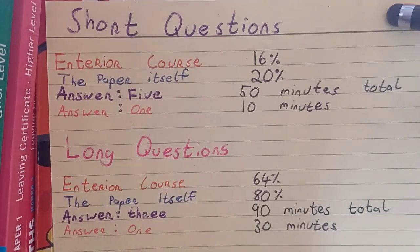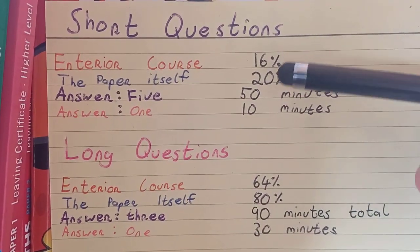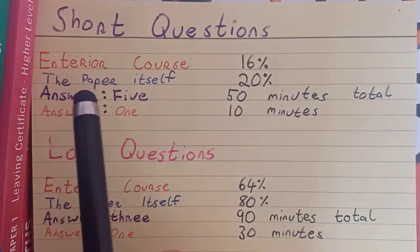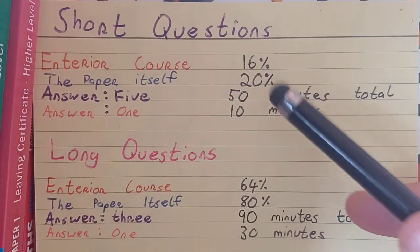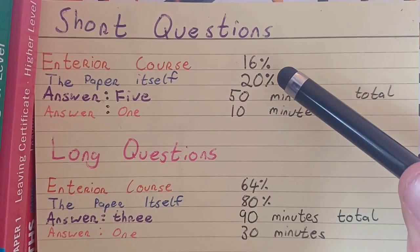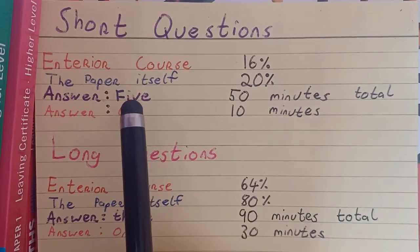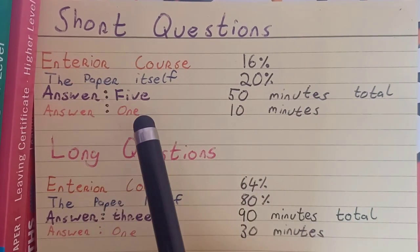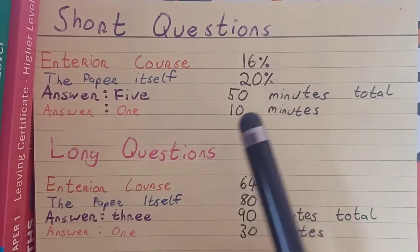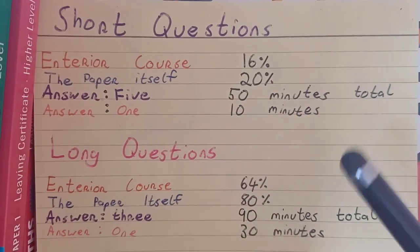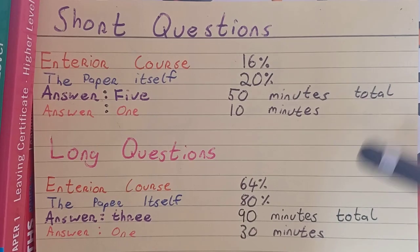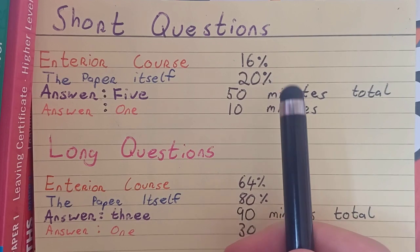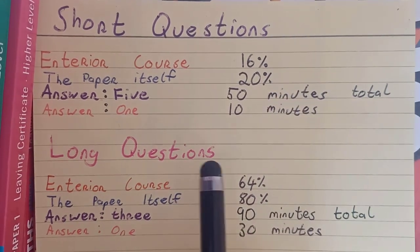Then after that, the short questions, the section one of the course is worth 16% of the entire course. That's including your project. The paper itself, it's worth only 20% of that. You're being marked out of your best five. So in theory, if you spend 50 minutes total doing it, and you answer one question for every 10 minutes, you should be grand. Although in that 50 minutes, I think you should be able to answer way more than five. But after that 50 minutes is up, you should definitely move on to the long questions.